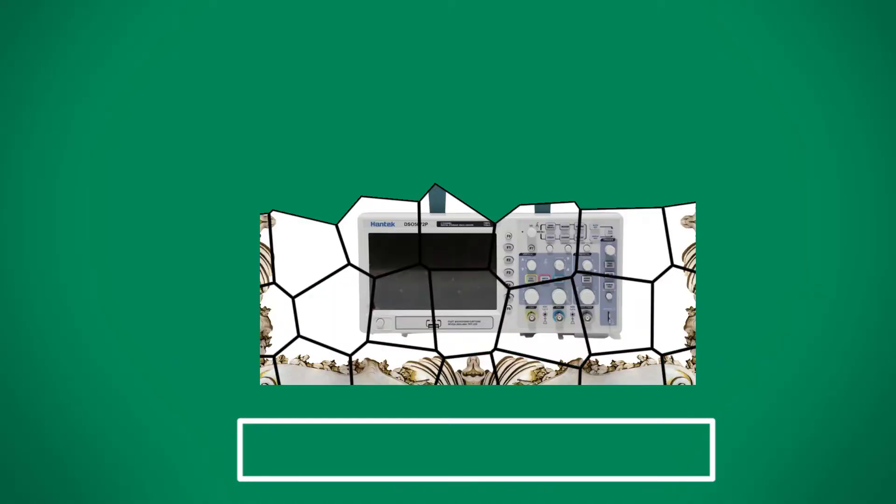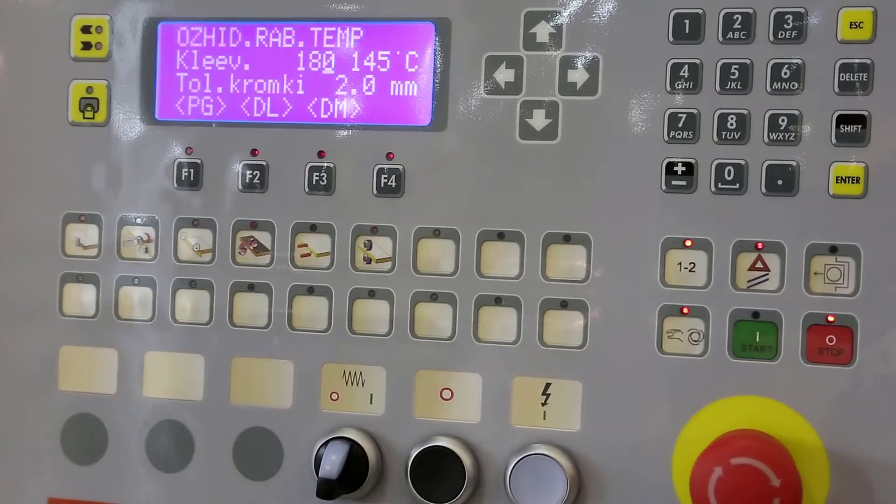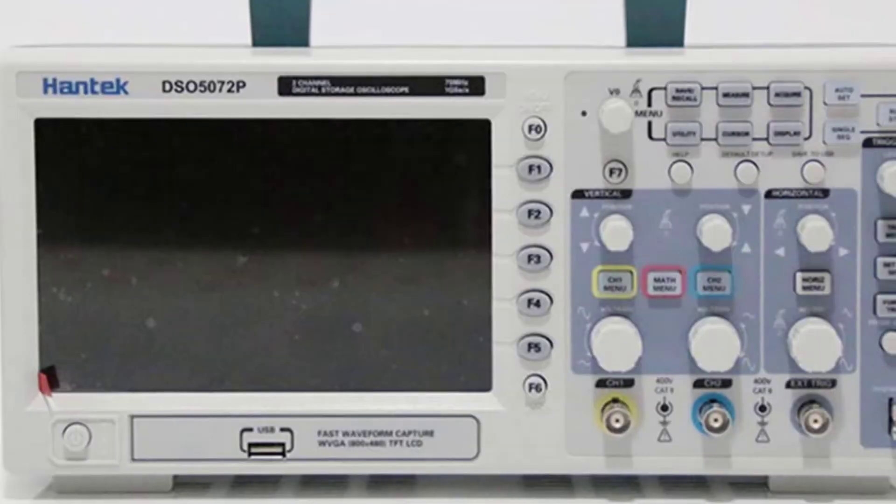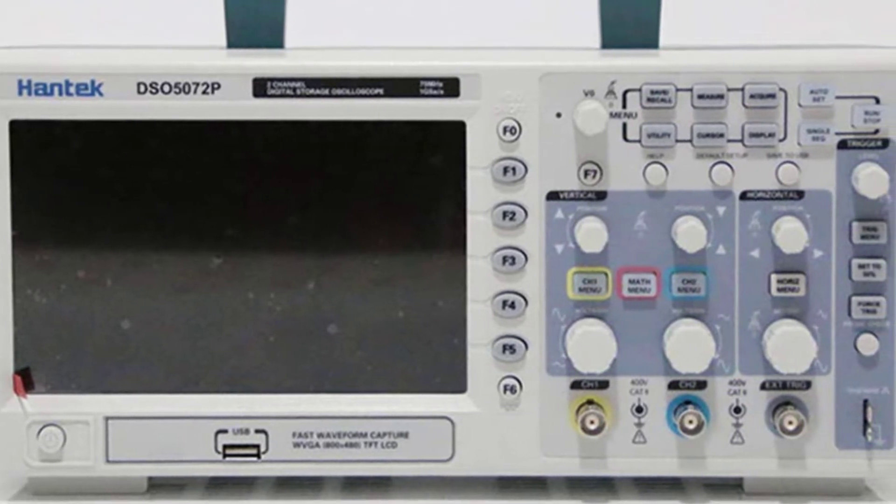At Number 3, Hantek DSO-5072P. Offering only two channels, the Hantek DSO-5072P is the ideal oscilloscope for beginners who are learning to use the device. The bandwidth of 70 MHz and the memory depth of 12 MPTS up to 24 MPTS is adequate for most applications.